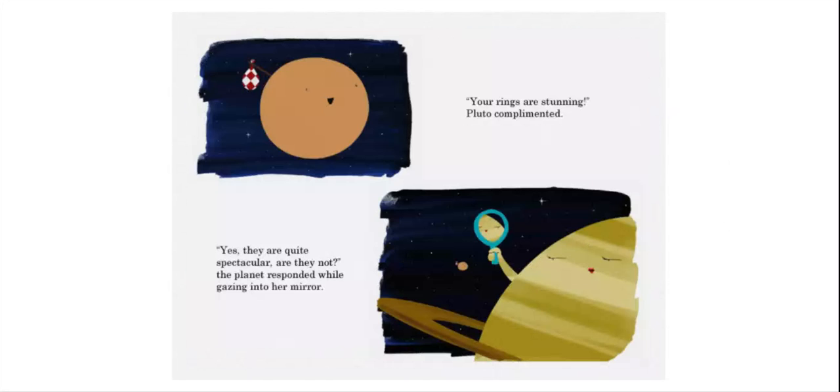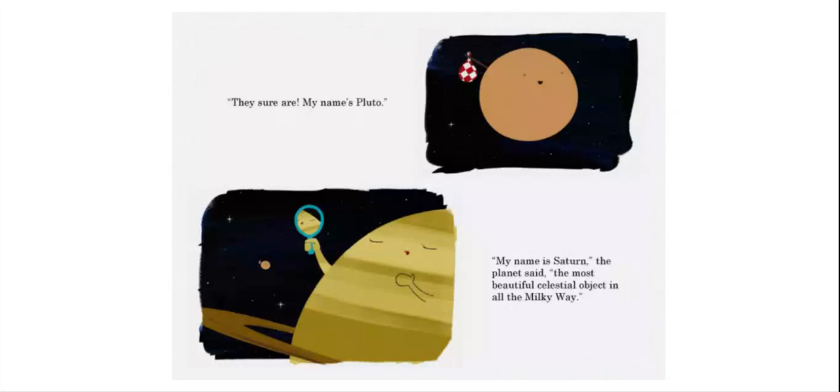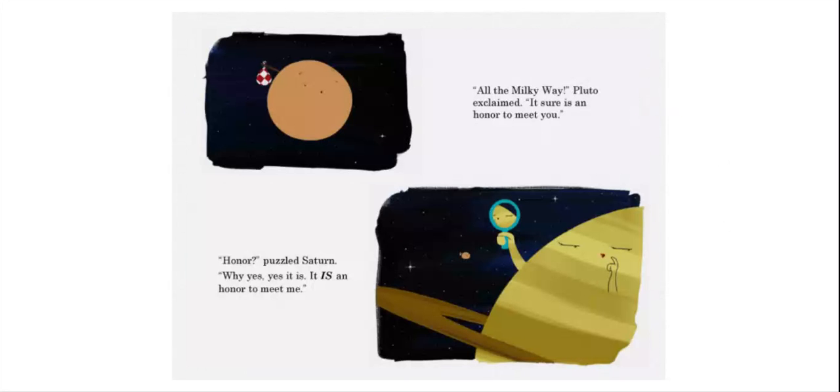Your rings are stunning, Pluto complimented. Yes, they are quite spectacular, are they not? The planet responded while gazing into her mirror. They sure are. My name is Pluto. My name is Saturn, the planet said. The most beautiful celestial object in all the Milky Way. All the Milky Way, Pluto exclaimed. It sure is an honor to meet you. Honor? Puzzled Saturn. Why, yes. Yes, it is. It is an honor to meet me.